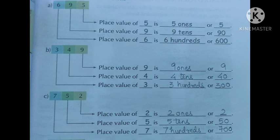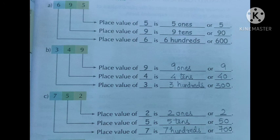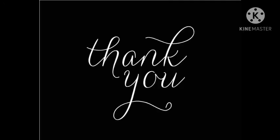Then comes the next question: seven hundred and fifty-two. We will start from the back. Two is in the place of ones, so the place value of two is two ones or just two. The place value of five is five tens or fifty, because it is standing in the tens place. Then, the place value of seven is seven hundreds or seven double zero, that is seven hundred.